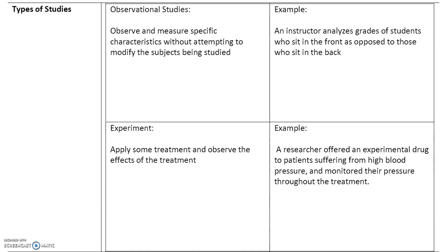In observational studies, we observe and measure specific characteristics without attempting to modify the objects that are being studied. For example, an instructor analyzes the grades of students who sit in front as opposed to those who sit in back. This instructor isn't interfering with the study in any way — the instructor is allowing students to sit where they want and simply analyzing the grades based on where the students are choosing to sit.